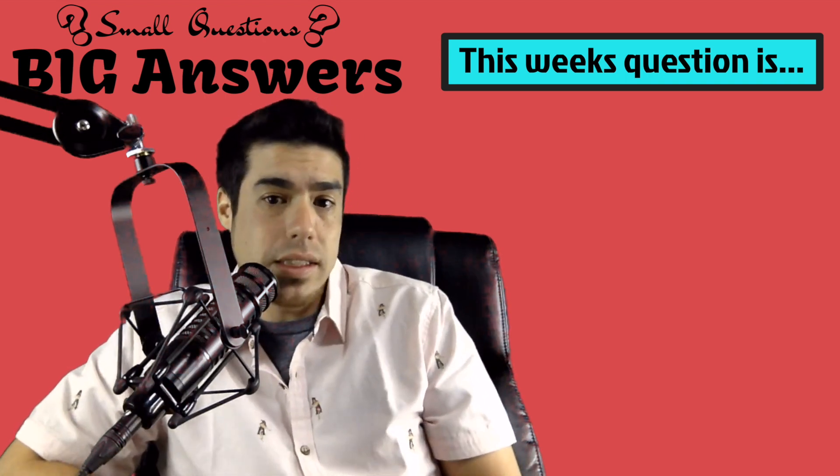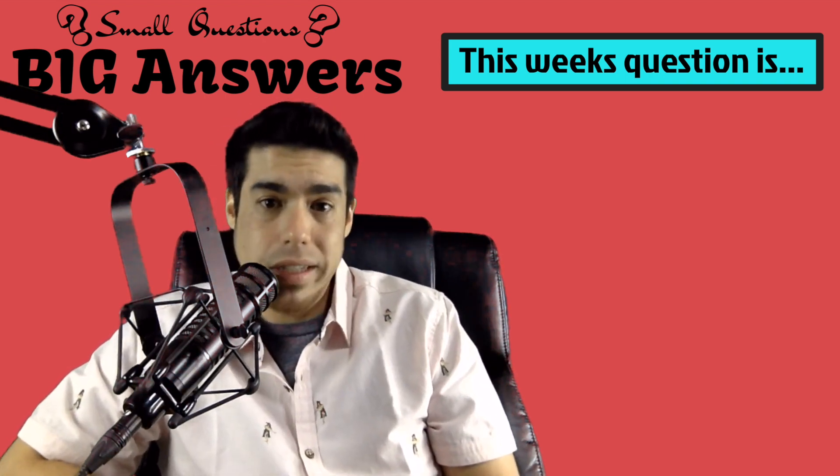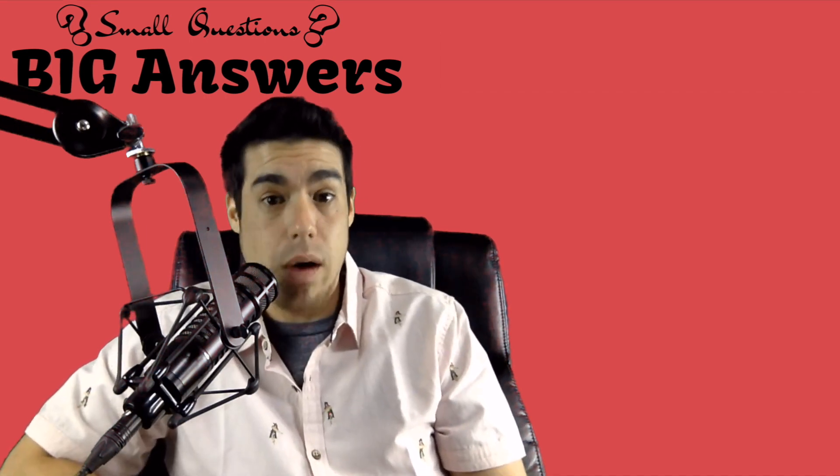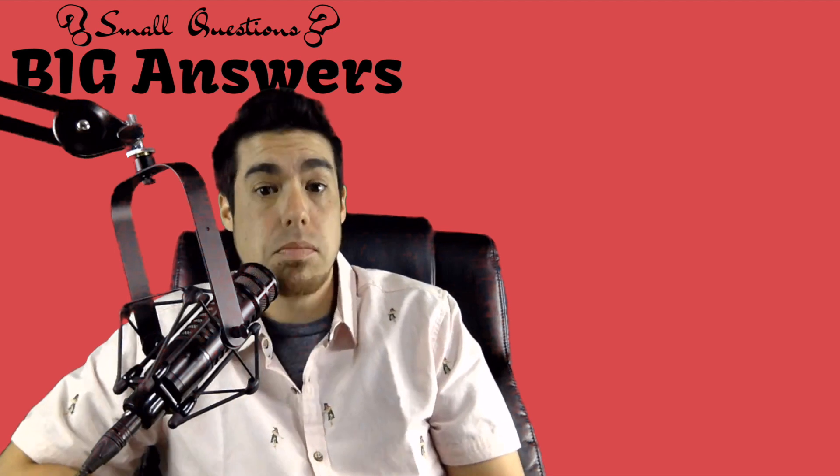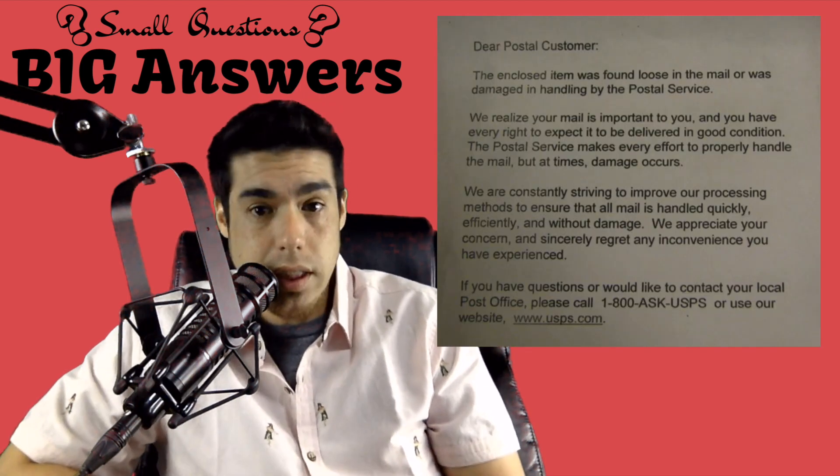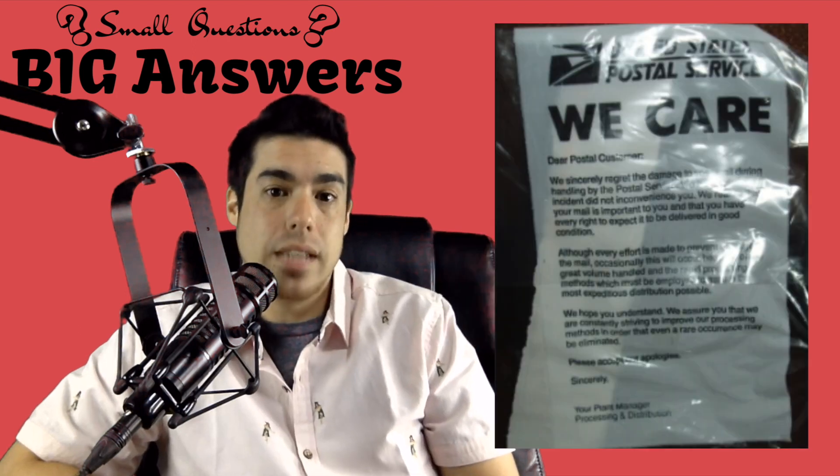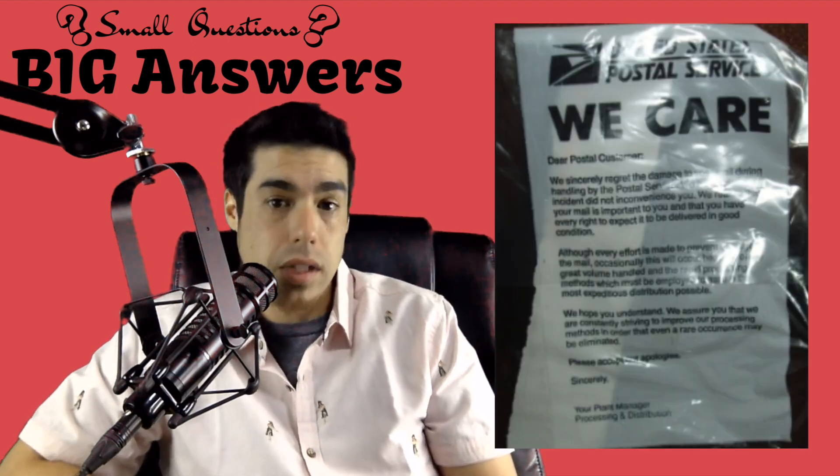But I do want to note real quick though that when a package is damaged and the contents are clearly not where they're supposed to be, they've fallen out and it's very visible that something was supposed to be there, you'll usually see a note included from your postmaster stating that the package was damaged during delivery.